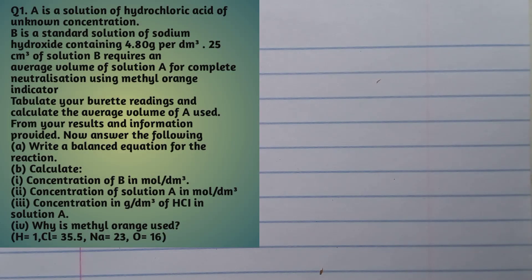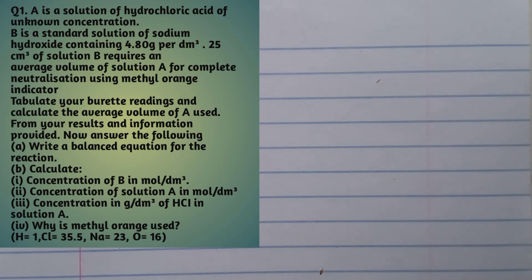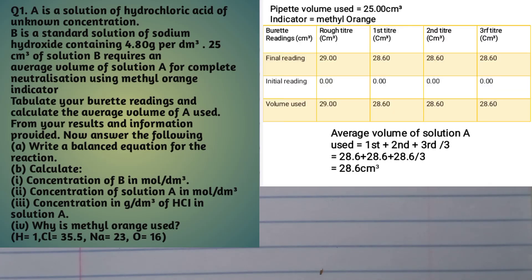The question as seen on the screen: A is a solution of hydrochloric acid of unknown concentration. B is a standard solution of sodium hydroxide containing 4.8 grams per dm³. 25 cm³ of solution B requires an average volume of solution A for complete neutralization using methyl orange indicator. Tabulate your burette readings and calculate the average volume of A used. From your results and information provided, answer the following.